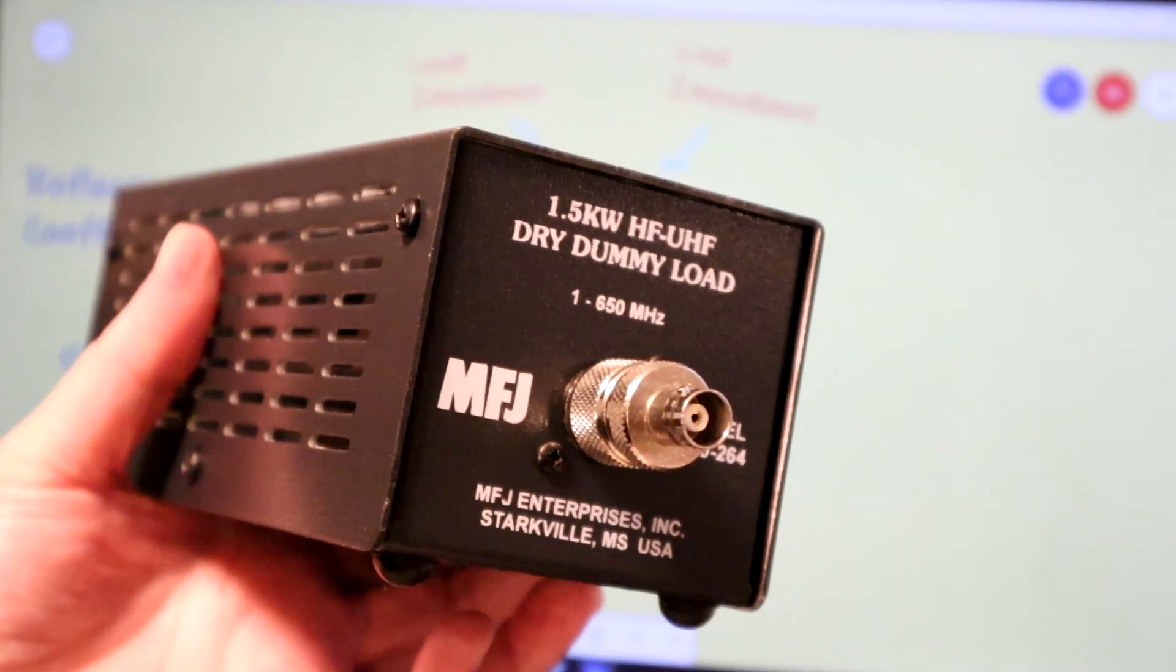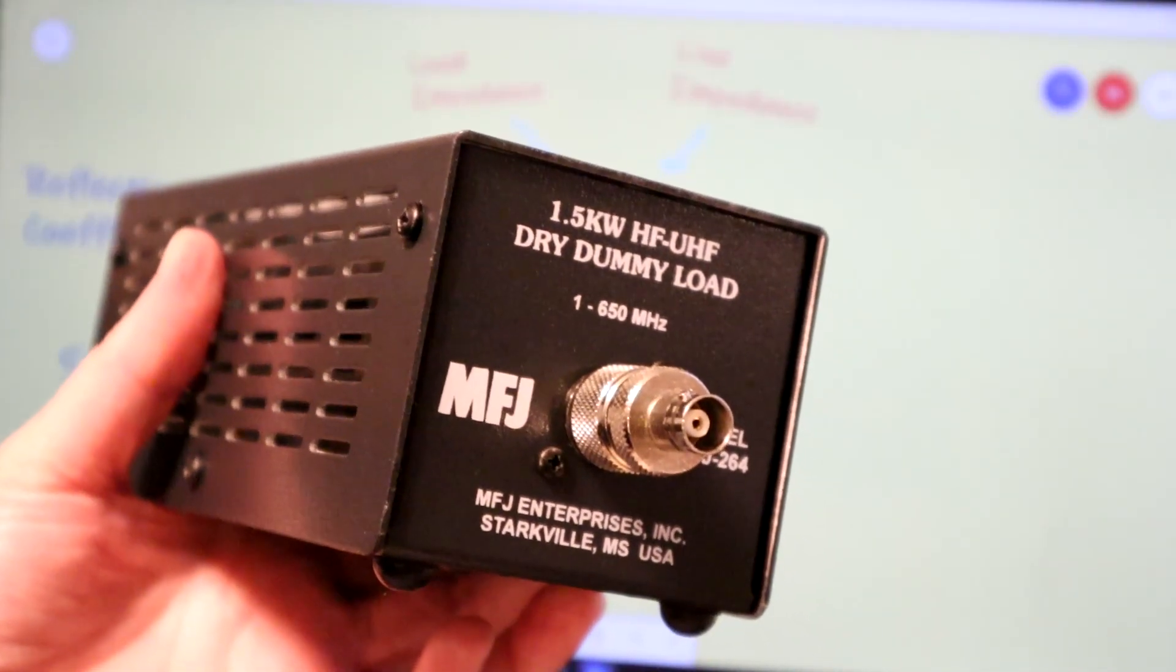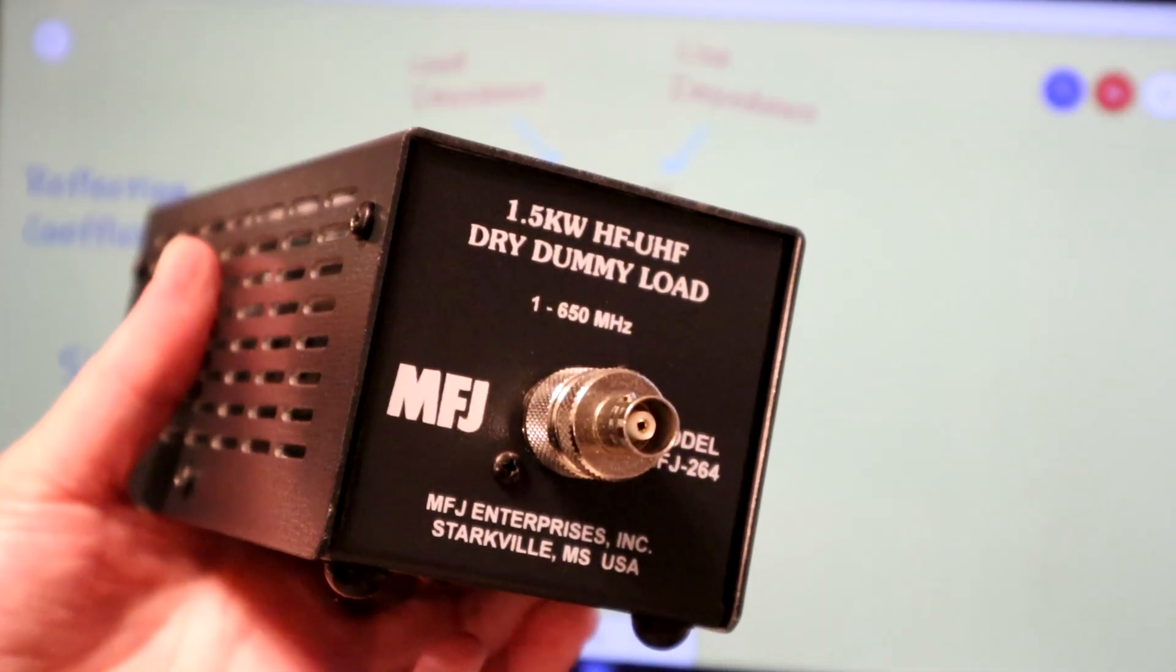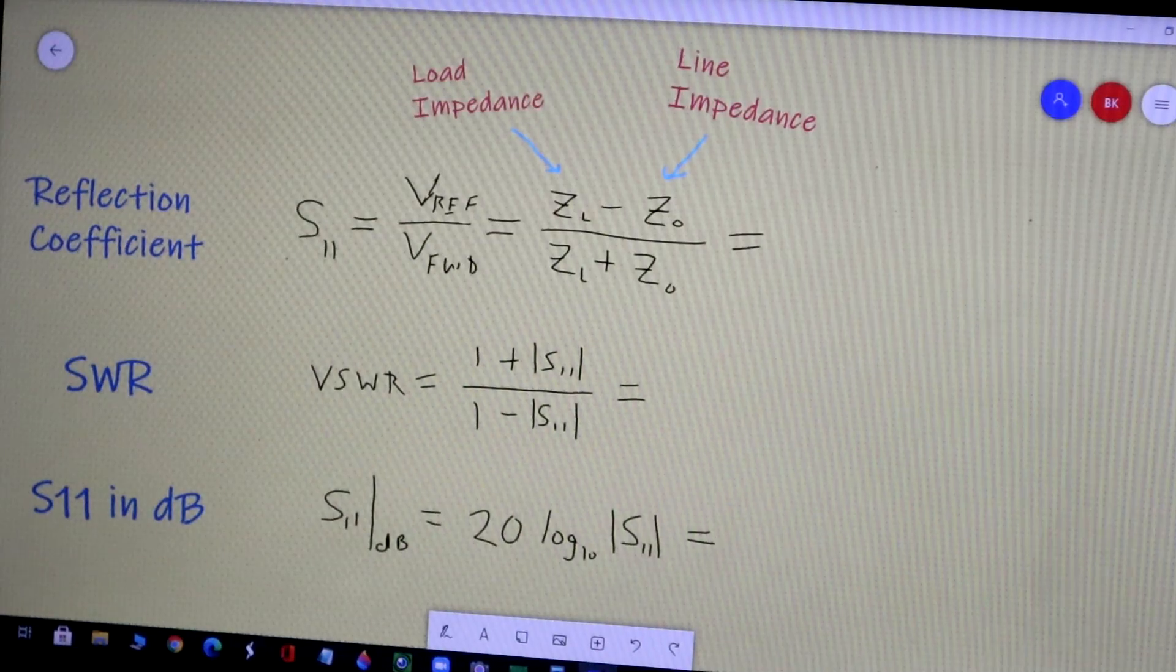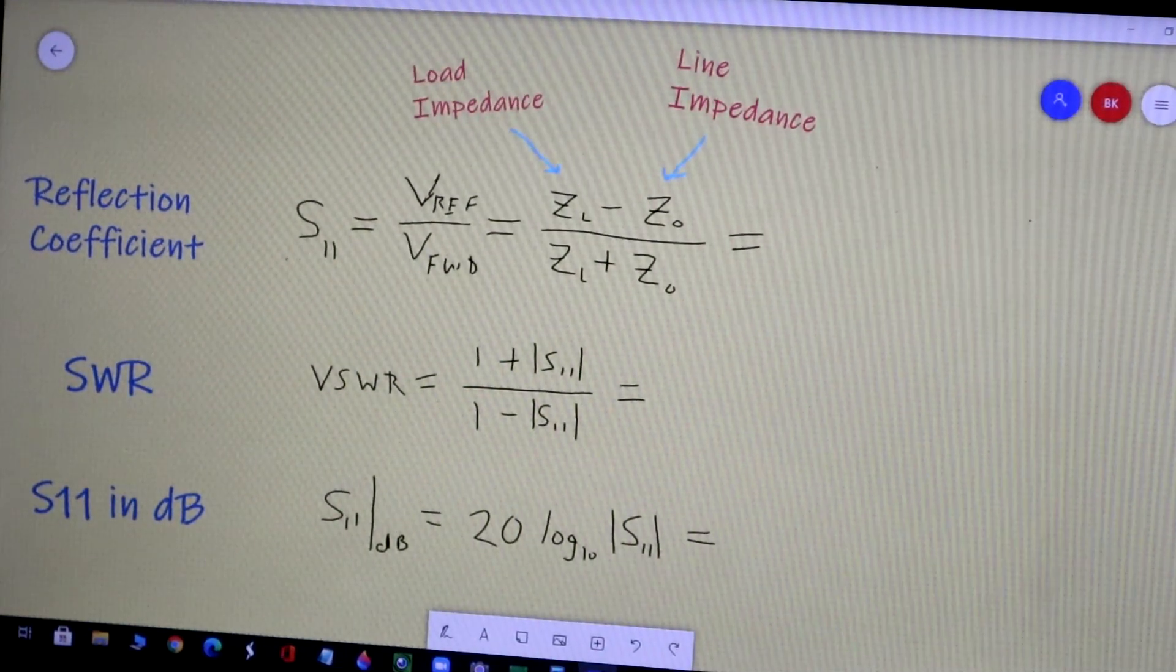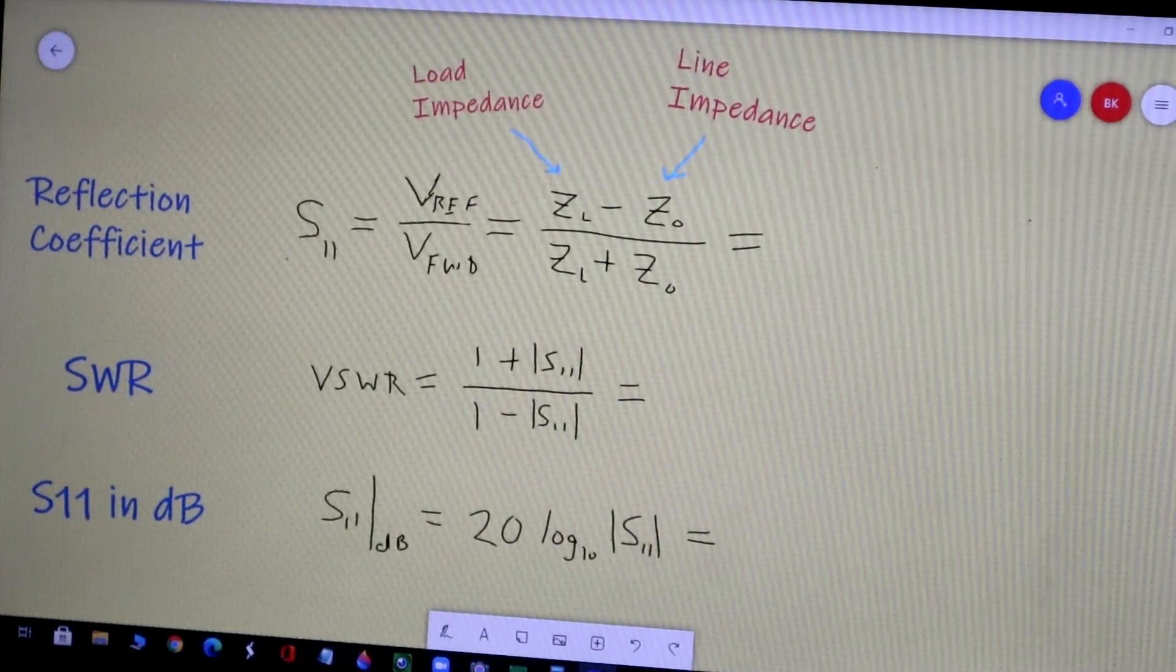So how does S11 measure how good the load is? We want this to be a good load and not provide any reflection. Well it turns out that what determines the reflection is how well the load impedance matches what's called the line impedance.